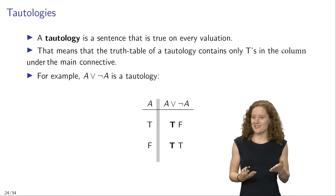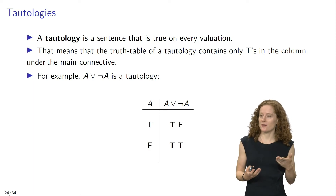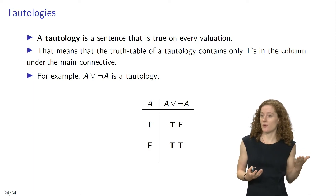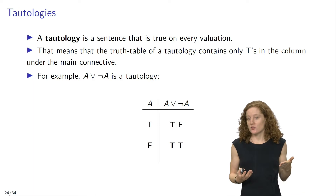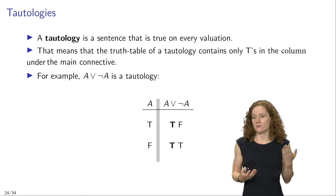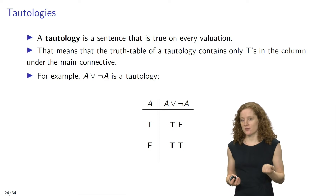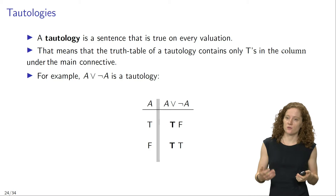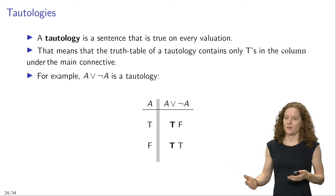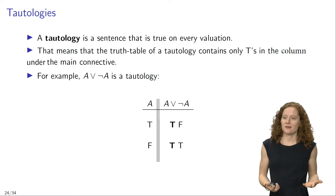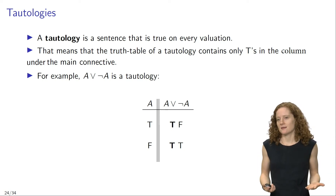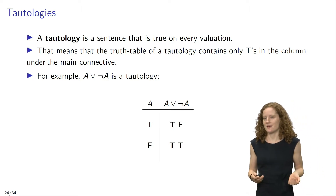A disjunction is true if and only if one or both of its disjuncts are true. It follows that the disjunction 'a or not a' is true in every row of this truth table. In the first row it is true because the first disjunct a is true, and in the second row it is true because the second disjunct 'not a' is true. So no matter the valuation of a, 'a or not a' is a true sentence, and that means that this sentence is a tautology.